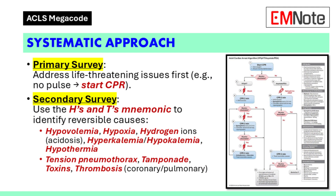Systematic approach: A systematic approach is essential during the Megacode exam. The primary survey addresses life-threatening issues first — for example, if there is no pulse, start CPR immediately. The secondary survey uses the H's and T's mnemonic to identify reversible causes. These include hypovolemia, hypoxia, hydrogen ions indicating acidosis, and hyperkalemia or hypokalemia.